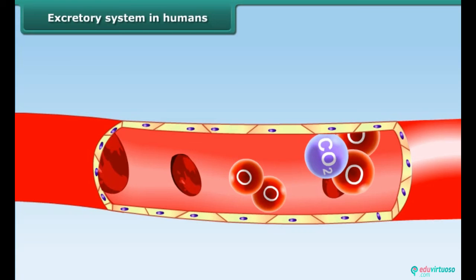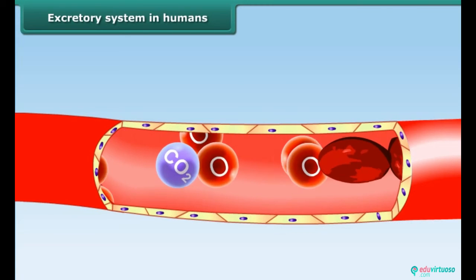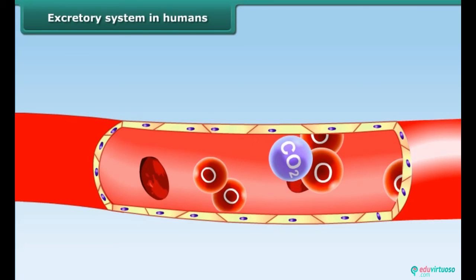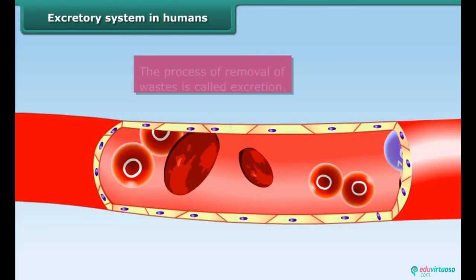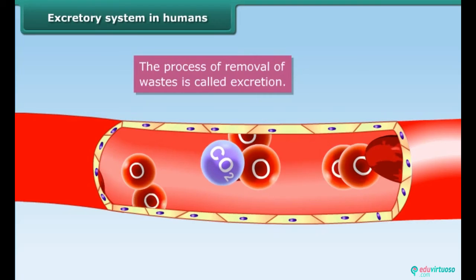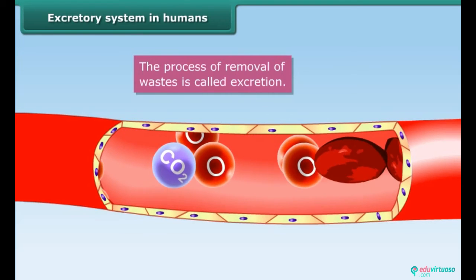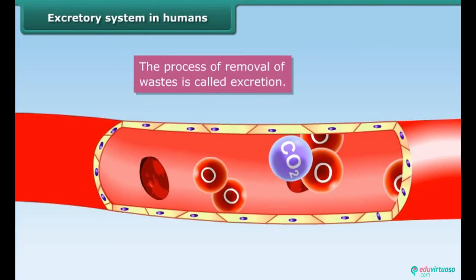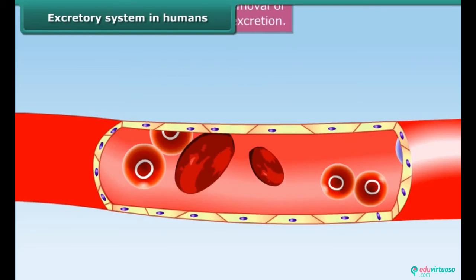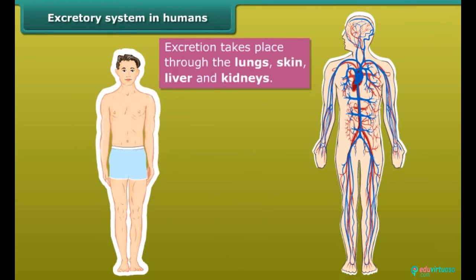Since these wastes are toxic, they must be removed from the body. The process of removal of wastes resulting from metabolism is called excretion. Excretion takes place through the lungs, skin, liver, and kidneys.